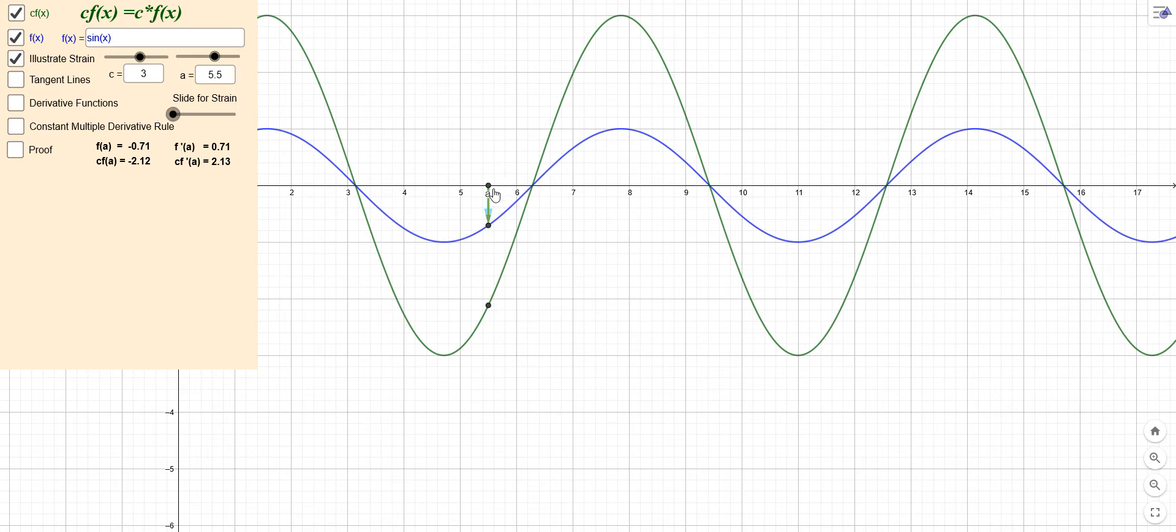So the original function here goes from a to f(a) - it goes down that distance. So what happens when you do three times that on the outside? You're just stretching that vector so that it's three times as long - c times as long - and that will give you the function here. So if you notice, we can see, so here c is...